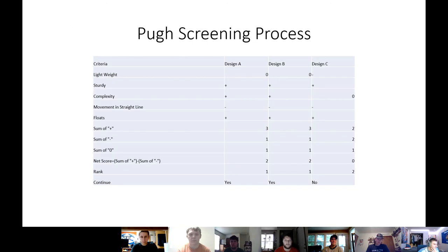This is a Pugh screening process. Our group selected a criteria based upon weight, sturdiness, complexity, the movement in a straight line, and whether it floated or not. Based upon those criteria, Design A and Design B had the highest net score, and therefore they moved on to the Pugh scoring process.